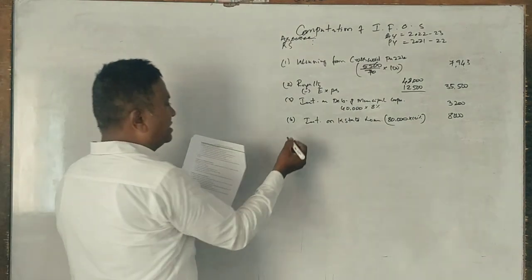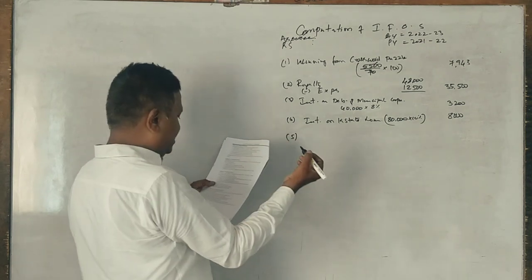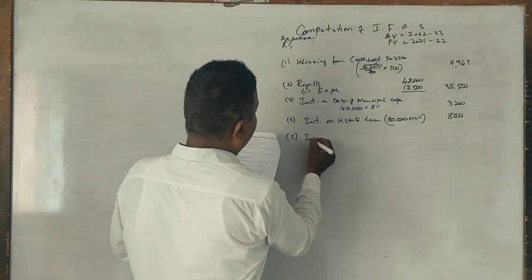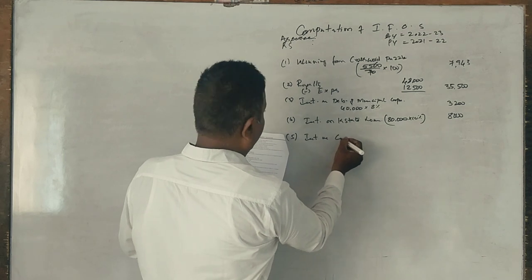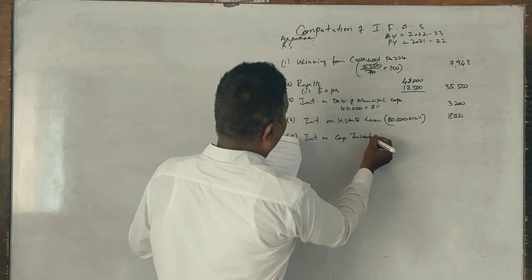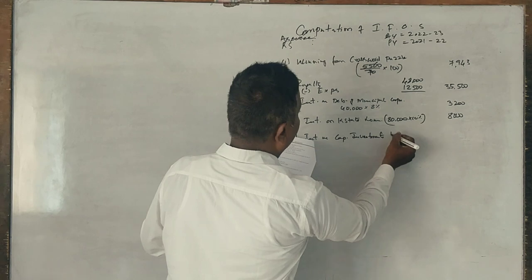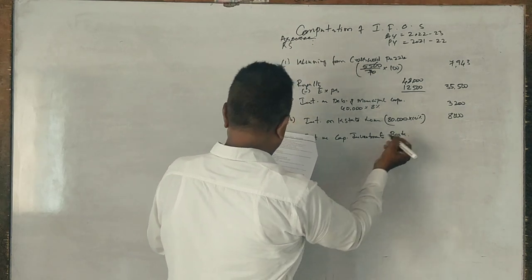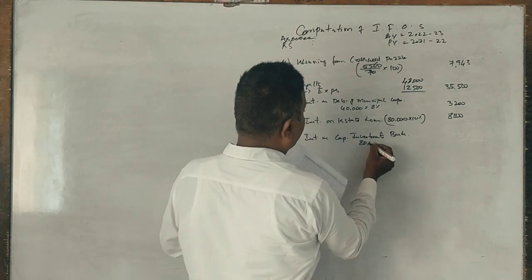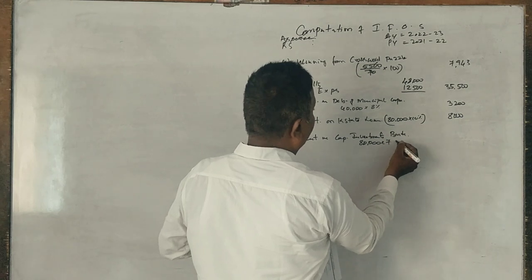Ito fully taxable money government, but less tax government. Interest on capital investment bonds: see 80,000 into 7% equals 5,600.